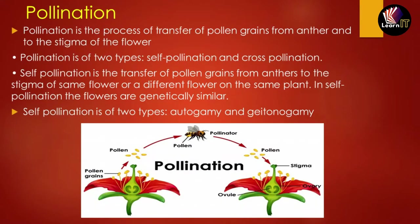What is pollination? It is the process of transfer of pollen grains from the anther to the stigma of the flower. Pollination can be of two types: the first is self-pollination and the second is cross-pollination.